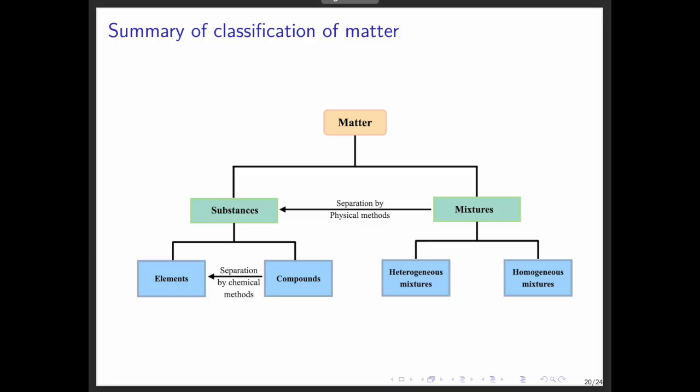To simplify the classification of matter, we can refer to this diagram. Matter can be either pure substances or mixtures. Pure substances can be elements or compounds, while mixtures can be homogeneous or heterogeneous. This framework helps us understand the materials around us.